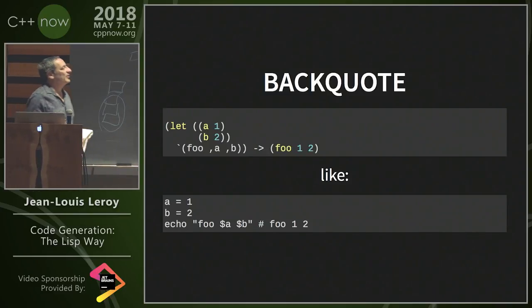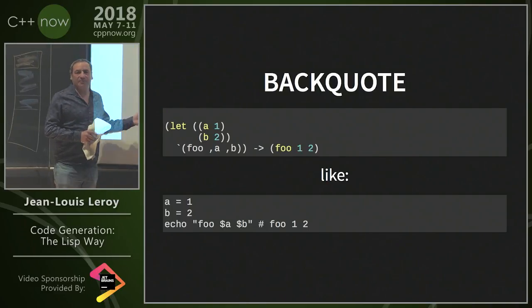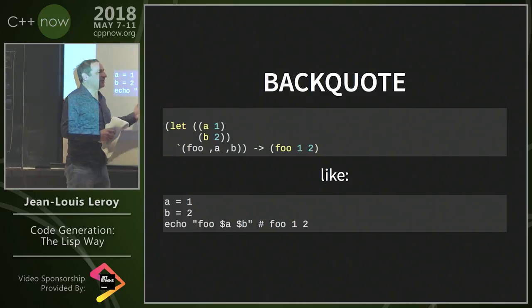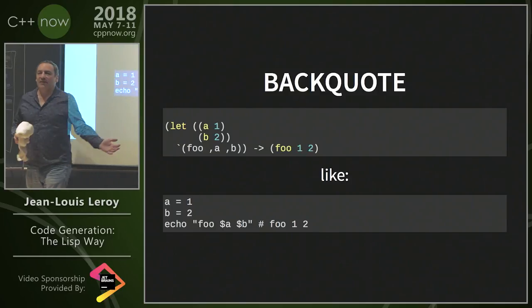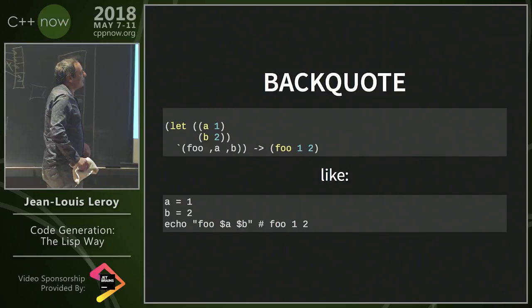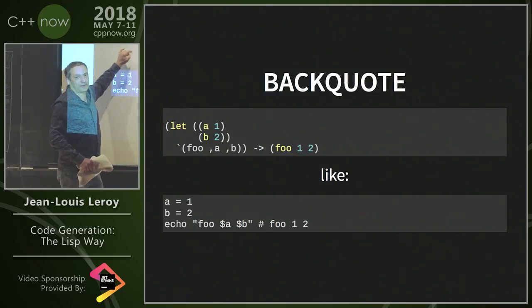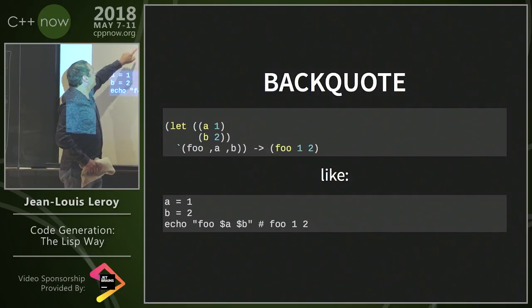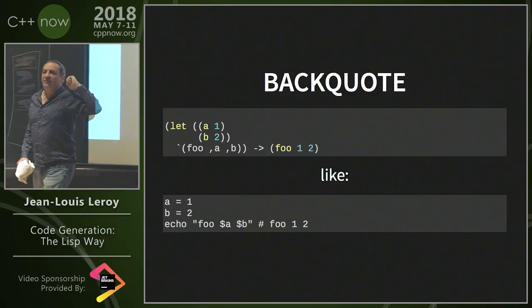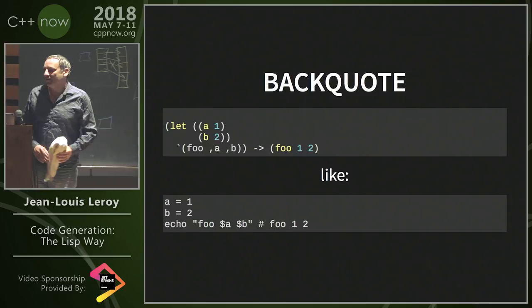The back-quote — that's a little more mysterious. But if you can program in shell, you already know it. It's simply interpolation. In shell, interpolation is a string made partly of constants and partly of variables. It works the same way here, but in terms of lists, not text. Wherever you see a comma, the variable that follows is injected into the list. Comma is just like dollar in shell scripting.